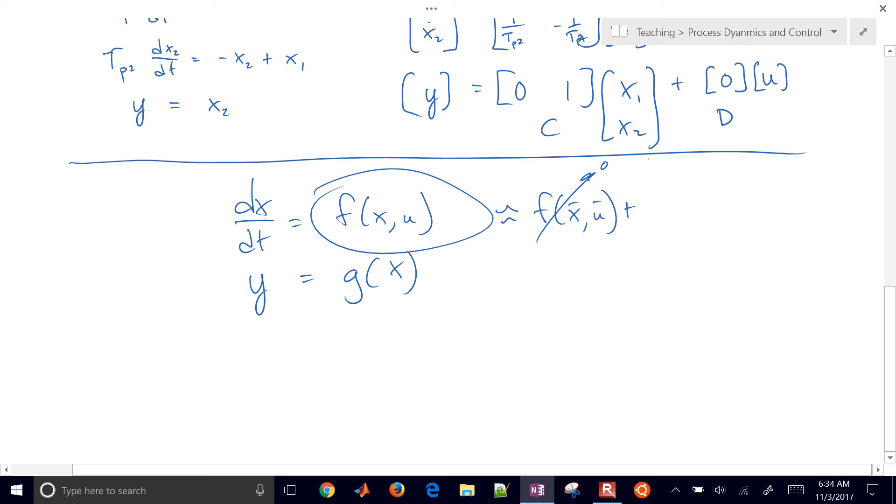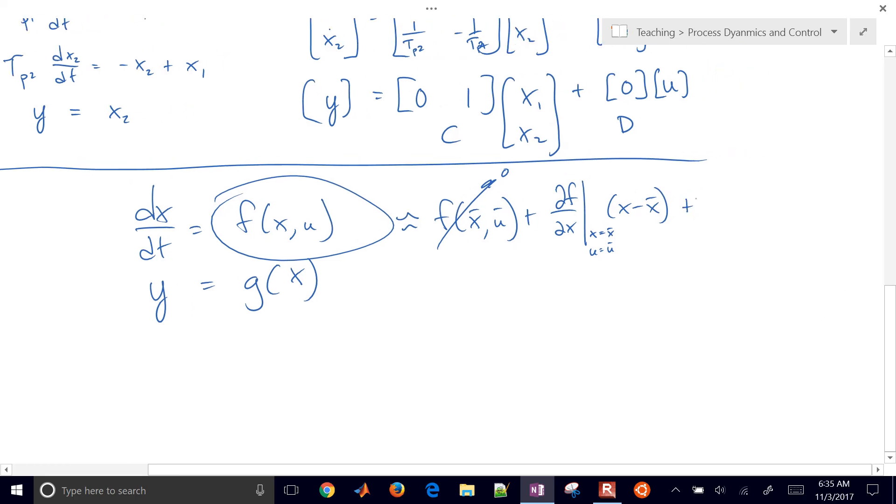And then you need to take the derivative with respect to X, plug in the nominal values, and then you can do X minus X bar. X bar is the nominal value. And then you'll also have dF/dU, plug in the nominal values again, and then this will be U minus U bar. So this right here will just be a number, and I'll call that alpha. And this will just be a number, I'll call that beta. And then we also want to linearize this one.